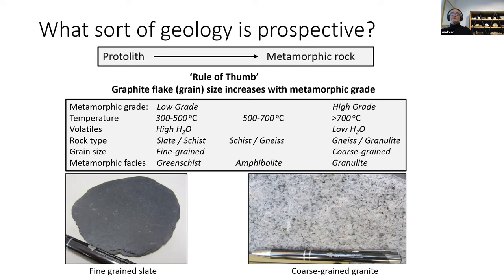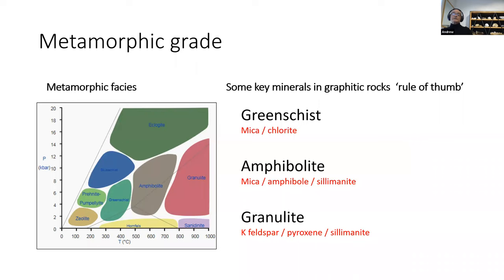I'd be very unlikely to look for a graphite deposit in a greenstone belt — you might find graphite, but it'd probably be low crystallinity and not easy to extract. In summary, we'd really be looking at somewhere around amphibolite to granulite grade, roughly 600 to 800 degrees centigrade. At greenschist grade there'd be mica or chlorite-bearing minerals, then moving up through amphibolite to granulite, minerals such as amphiboles, sillimanite, and pyroxenes, which have major implications for separating minerals and actually liberating graphite.